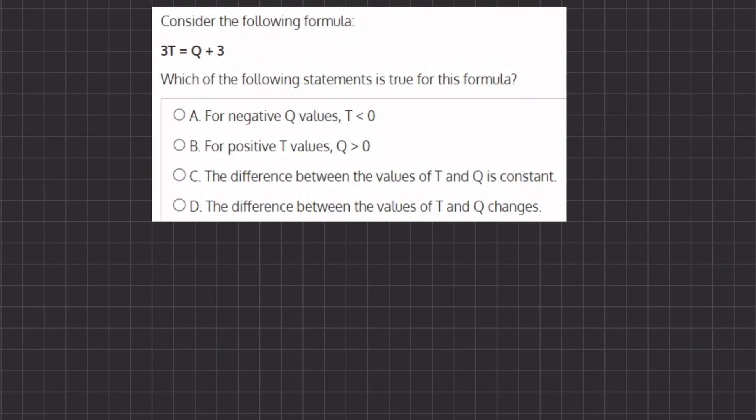So let's start off with A. We have here, for negative Q values, T < 0, meaning that T will be negative.